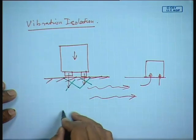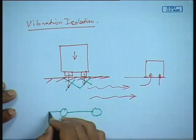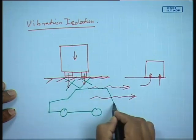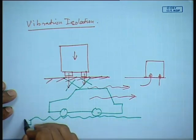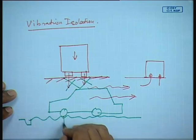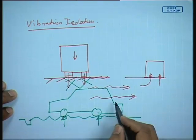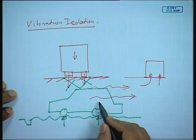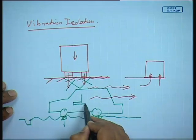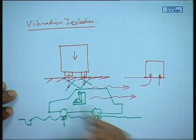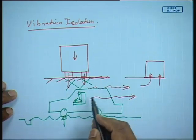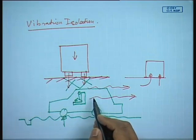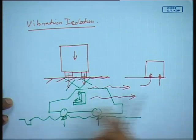The vice versa also happens. For example, when driving on a road with roughness and potholes, these give rise to forces that get transmitted and create a sense of vibration to the human being sitting in the car. We would like to isolate this motion coming from the ground through a proper selection of what are known as vibration isolators, which we will discuss in subsequent sections.